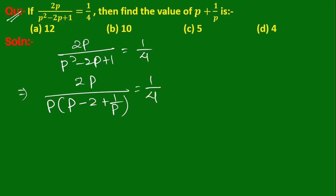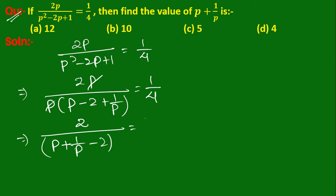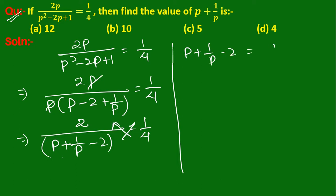The p's cancel, so 2 upon (p plus 1 upon p minus 2) equals 1 upon 4. After cross multiplication, we get p plus 1 upon p minus 2 equals 8, so p plus 1 upon p equals 8 plus 2.